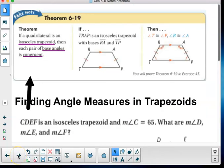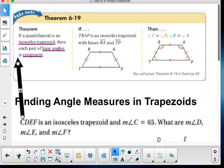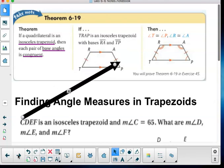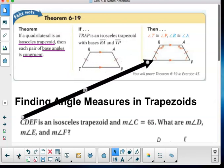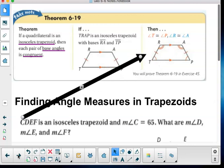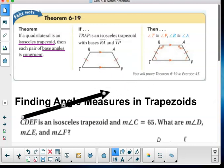Now, isosceles trapezoid. If a quadrilateral is an isosceles trapezoid, then each pair of base angles is congruent. So if it's an isosceles trapezoid, and I know that from this and that, the base angles are congruent. And that's angle T and angle P are the same, angle R and A. And keep in mind, they are supplementary. T and R add together to be 180 degrees. But this is all about base angles being congruent.